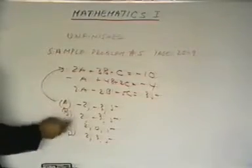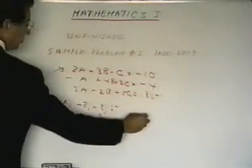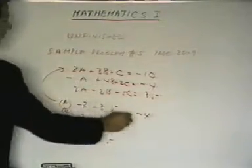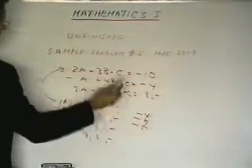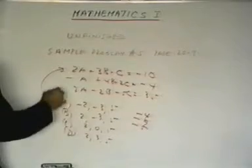First one, for instance, becomes 2a is minus 4, plus 3b is minus 9, minus c minus 5. Nope, that's not it. That's not equal to minus 10.